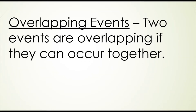Two events are overlapping if they can occur together. For example, if I've got a bag of different colored and different sized marbles, and I want to know the probability of getting a green marble or a big marble, those events are overlapping because it's possible to get a big green marble. So our probability formulas are going to be a little bit different for overlapping events versus non-overlapping events.